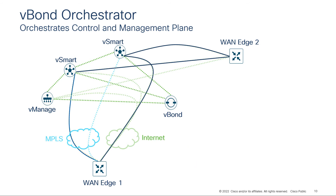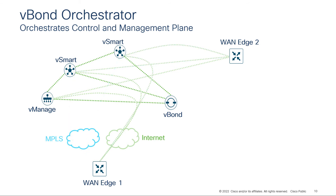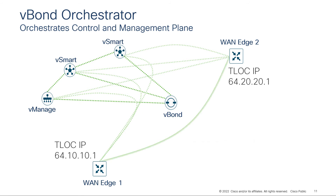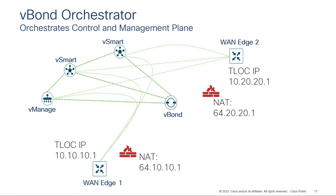The V-Smart will exchange this information from other WAN edge routers in the network, behaving like route reflectors for OMP information. So now we should have the information needed to establish a secure data plane to other remote sites — mainly our T-Lock information and encryption keys. Data plane is established by starting encrypted bi-directional forwarding detection, or BFD, sessions between peers over each transport. Each edge tries to connect to the T-Lock IP address of its peer. But what happens if these edge routers are sitting behind NAT devices? They are not aware of the NAT device, and if BFD sessions aren't directed to their post-NAT addresses, those connections will fail.